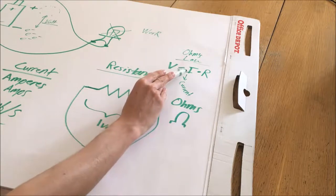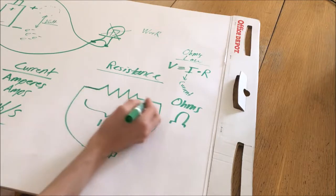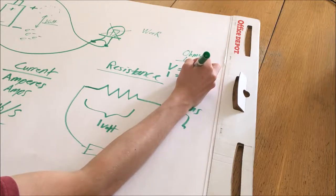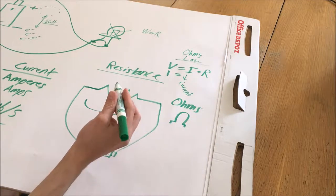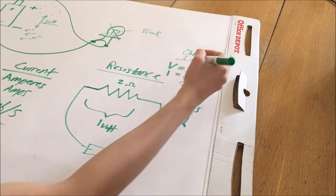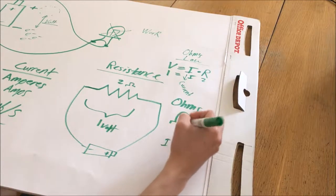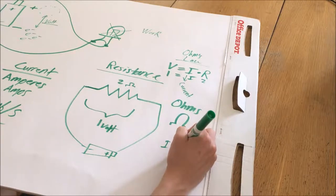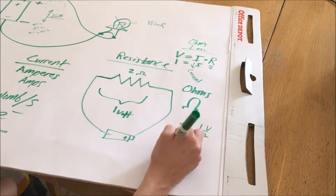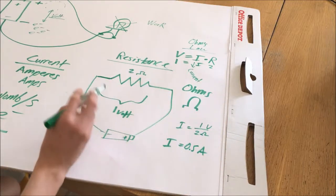Resistance is measured in ohms, which have the omega symbol. Because voltage equals current times resistance, and assuming we have a one-volt power source driving this resistor circuit, that means one volt equals the current times the resistance. If I use a two-ohm resistor arbitrarily, I can solve for I: the current equals voltage divided by resistance, which is one volt over two ohms. Therefore, the current in this circuit would be 0.5 amps — half an amp will flow continuously because of this resistor.